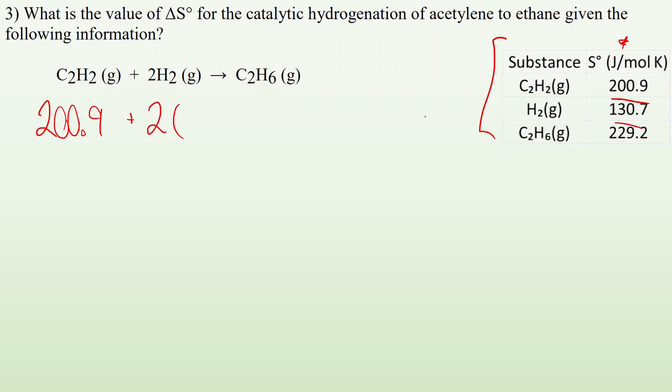And then we look at the products as well. C2H6 gas is, well, there's one of them and it's 229.2. So if I add these together, I know my reactants started as 462.3 joules per mole Kelvin.